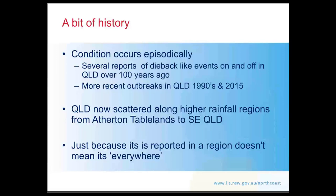A little bit of history: the condition occurs episodically. There are several reports going back in history of dieback-like events in Queensland, some going back over a hundred years ago. The most recent outbreaks in Queensland were in the 1990s and again in 2015. It's now fairly well scattered along the higher rainfall areas receiving more than 600 millimetres annually, from the Atherton Tablelands right down to South East Queensland and the far north coast of New South Wales.